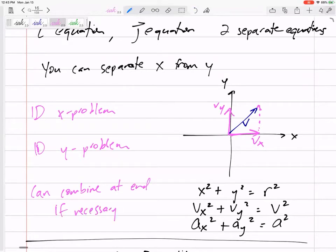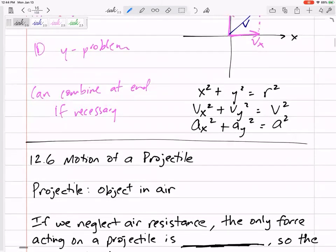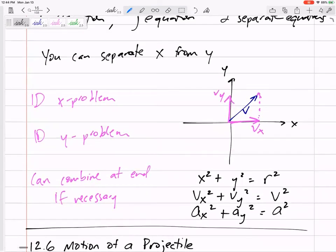And then you can kind of bring them back together at the end if necessary. So if I want to find my final velocity, I'm going to find my final X velocity. I'm going to find my final Y velocity, and then it's a triangle, A squared plus B squared equals C squared, to find the final magnitude. So this is how I'm going to think about these problems.